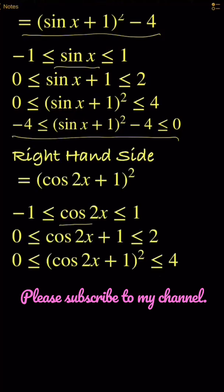For the right hand side, (cos 2x + 1)² must be between 0 to 4.